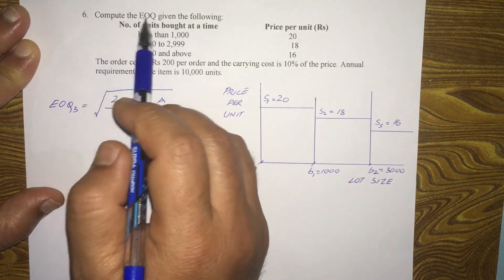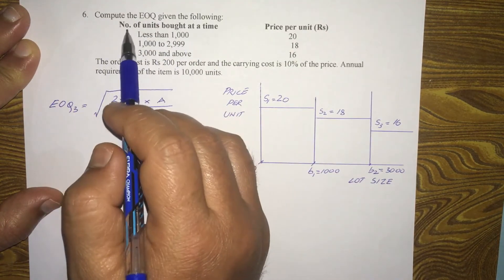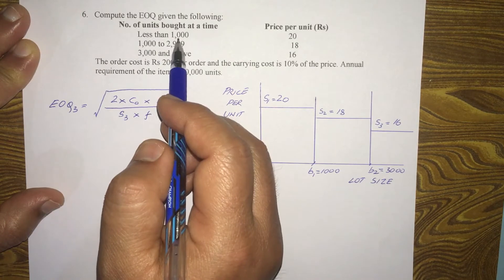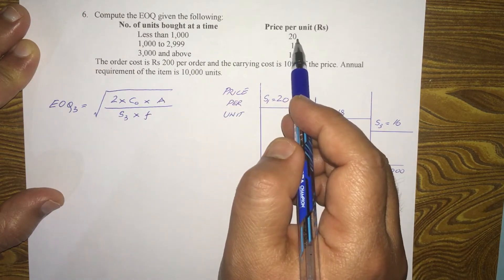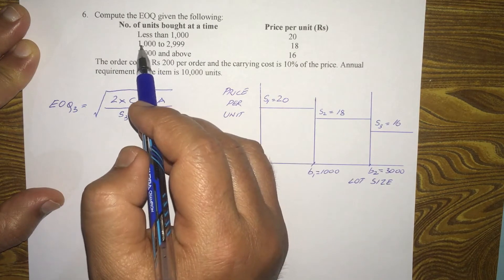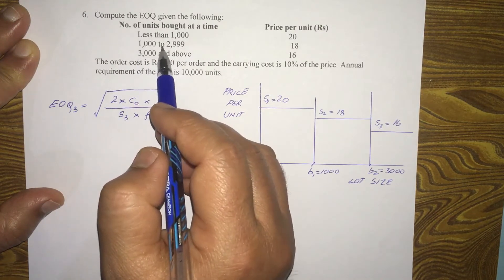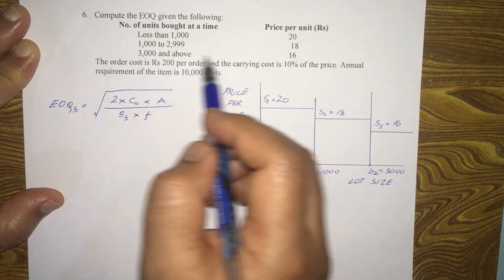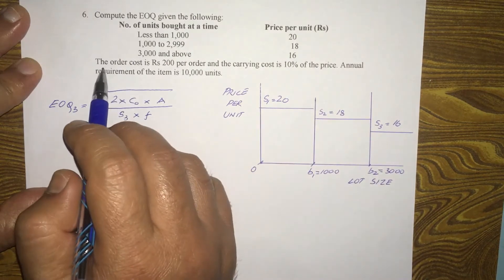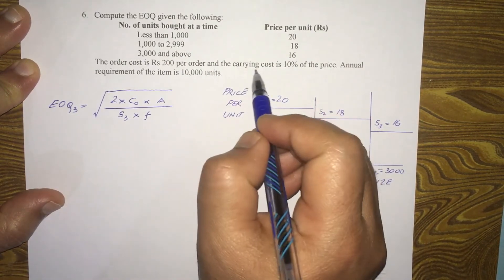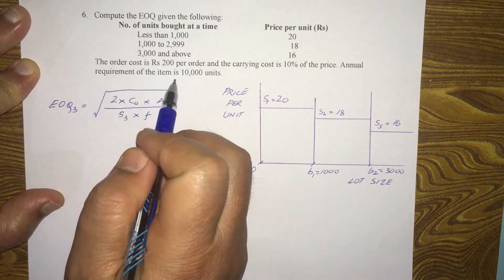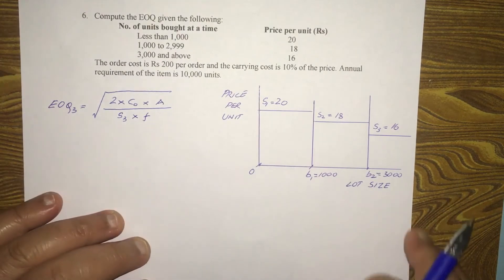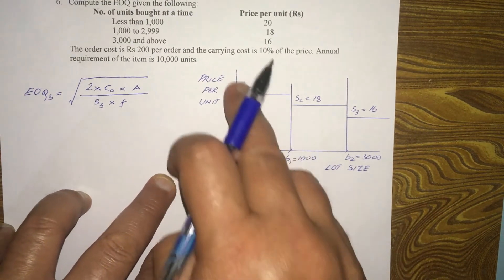Let's read the problem and solve it. Compute the EOQ given the following: for anything less than 1,000 units, the price per unit is 20 rupees. For 1,000 to 2,999 units, it's 18 rupees per unit. For 3,000 and above, it's 16 rupees per unit. The order cost is 200 rupees per order, the carrying cost is 10% of the price, and the annual requirement is 10,000 units.